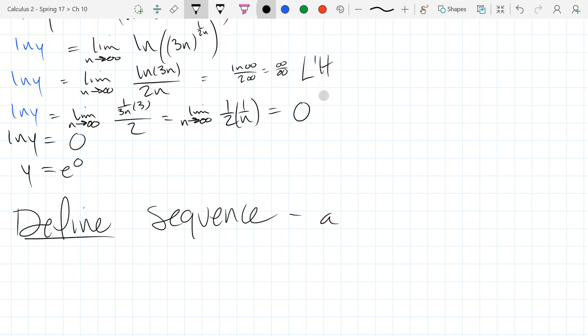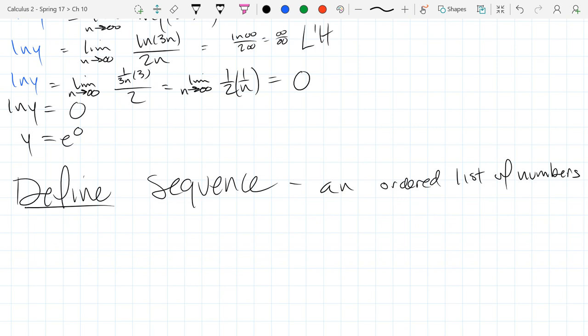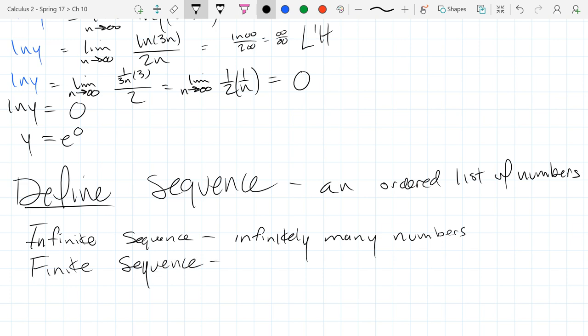Starting at the beginning, what is a sequence? An easy definition, an ordered list of numbers. So you could technically just say a list of numbers, but the order is important. So if you swap around the order, you're talking about a different sequence. You can swap the order, but you're talking about a new sequence at that point. So that's a sequence, an infinite sequence. So that means how many numbers are in the list. So there's infinitely many. And, of course, a finite sequence. Finitely many numbers.